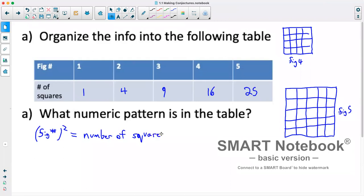So now we can test to see if our prediction was correct. So they said that the eighth figure would have 64 squares. So eight squared is 64. So our prediction should be correct.